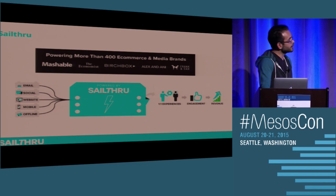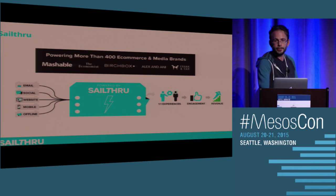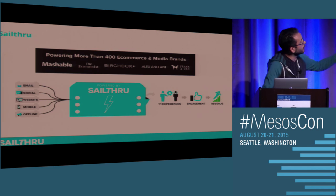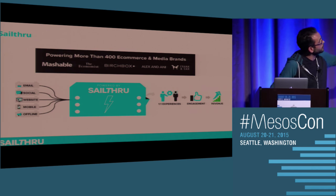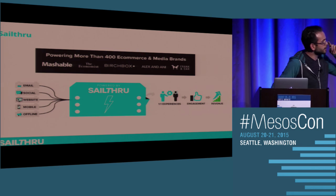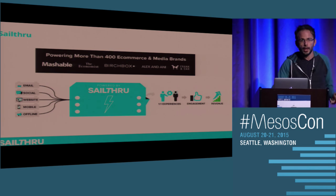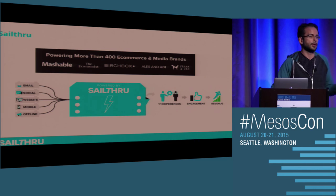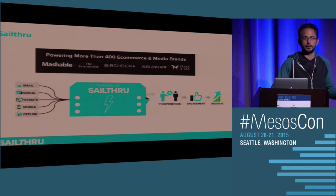A little about Sailthrough — it's a software-as-a-service platform based in New York. We power over 400 e-commerce and media brands like Mashable, The Economist, Birchbox, and Alex and Ani. We collect a ton of different data on-site, in email, and in mobile applications, and it's all ultimately about personalizing and automating communications — emails or on-site experiences.